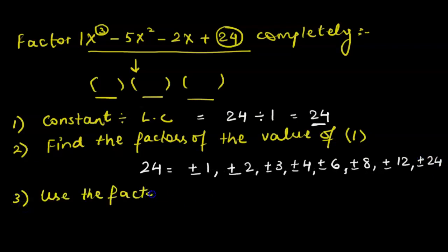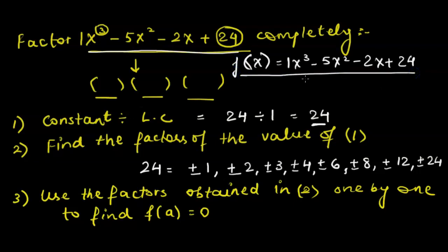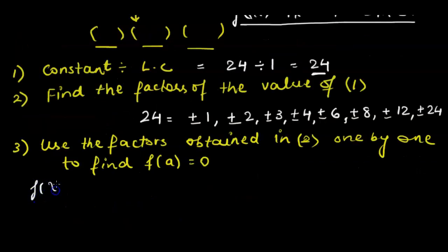Step three: use the factors obtained in step two one by one to find out which factor gives f(a) = 0. We consider the original function as f(x), then use the factors ±1, ±2, and so on as the value of a, substituting in place of x in the function to find which one gives f(x) = 0. Let's rewrite the function: f(x) = x³ − 5x² − 2x + 24.